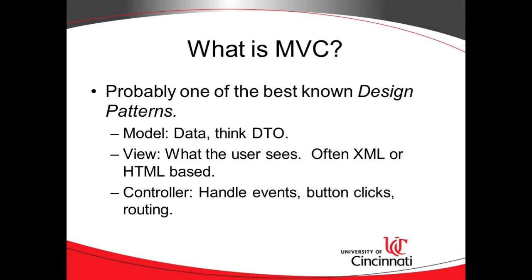For the model, we generally are thinking about data. Think of a DTO — a data transfer object — a Java class that has attributes with getters and setters. The model could be populated from a database or other persistence mechanism, or it could be populated by a user on a web form, mobile app, or anything else like that. So the model is essentially the data that the user enters or that the user sees.